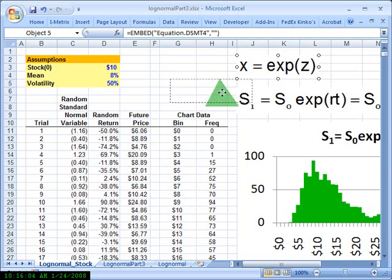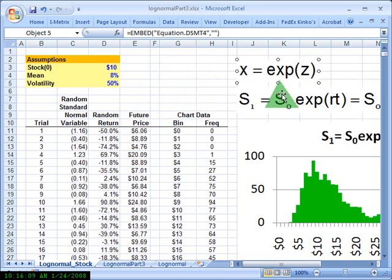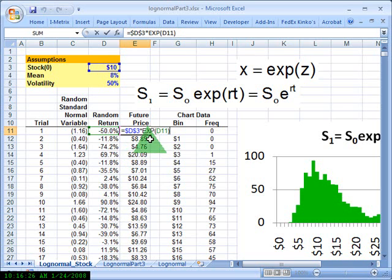Now I want to use this function here to continuously compound today's stock price, that's $10, at the periodic rate of return that I've generated here, which is normally distributed. All I do is take the $10 multiplied by the exponential function of my periodic rate of return. If I take the stock price and multiply by the exponential function of that rate of return, I am effectively compounding the stock at that rate over one year.